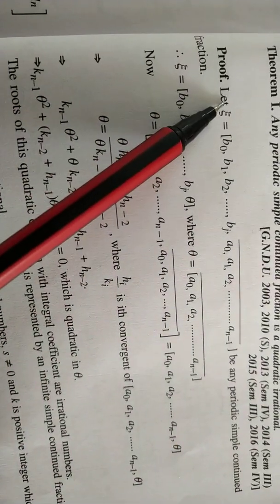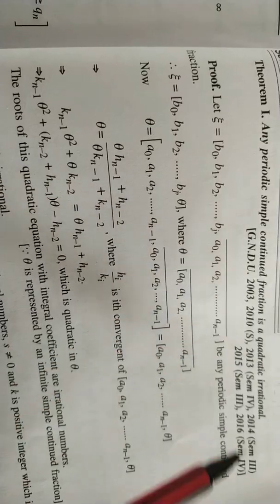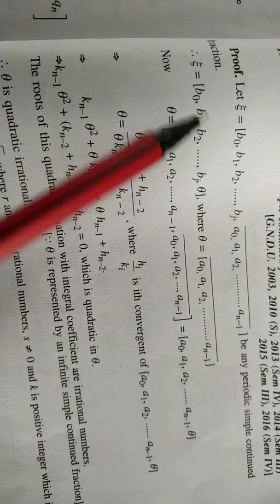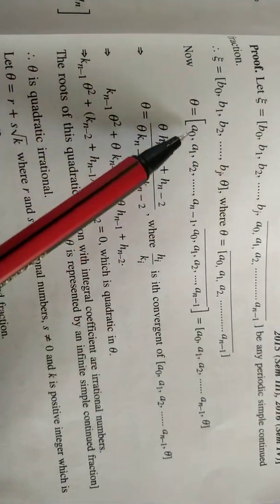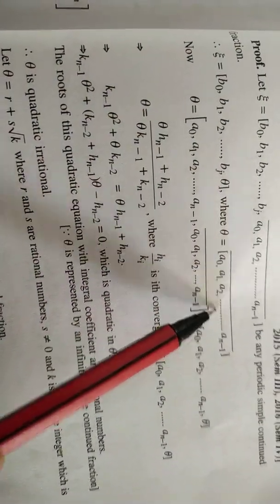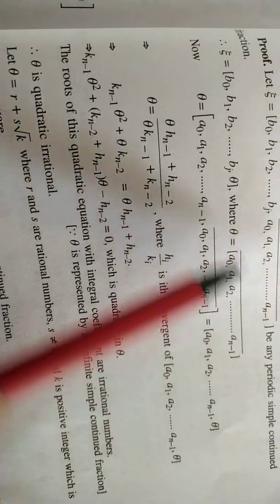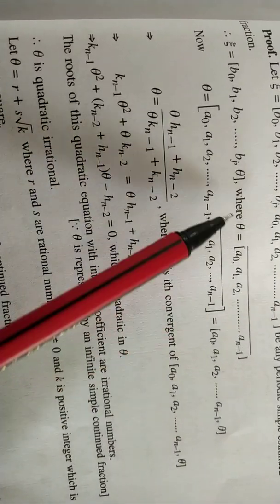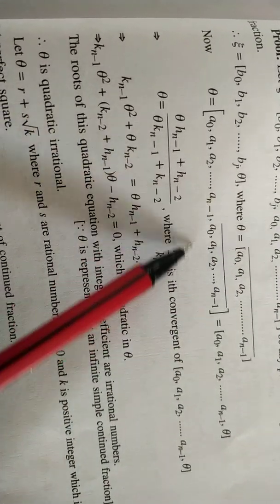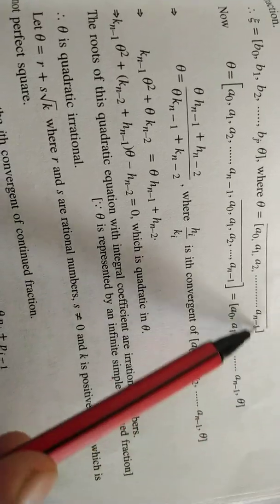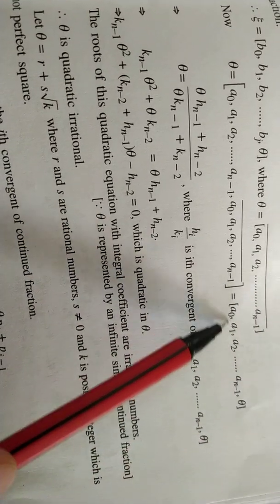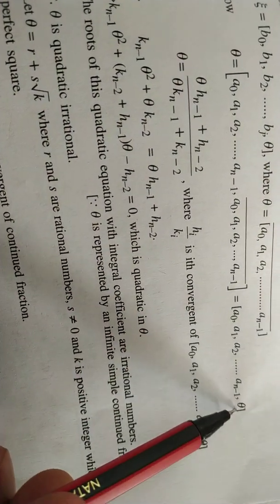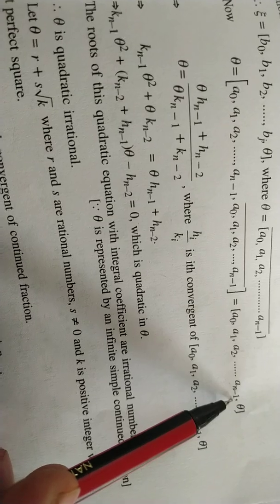For the proof, we take a periodic simple continued fraction and call the repeating part θ. So θ equals [a₀, a₁, a₂, ..., a_{n-1}, θ], because θ repeats. We write this as a continuous fraction and represent it in convergent form. This is θ written at position n-1.